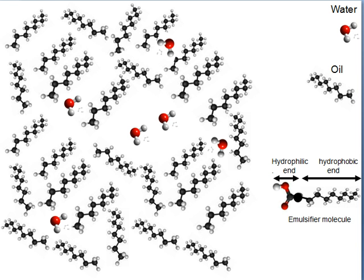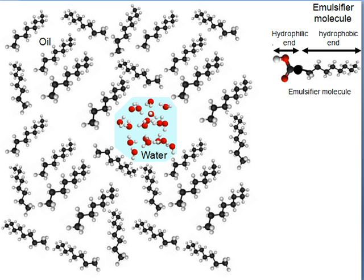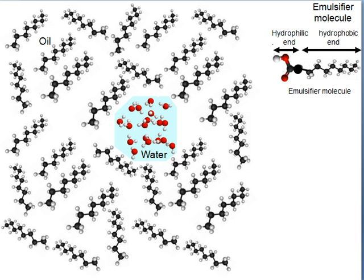So what we can do is put an emulsifier molecule into our water and oil mix. And if we do that, what tends to happen is that the emulsifier links to little clusters of water and binds with the hydrophilic end, and the hydrophobic end binds to the oil.